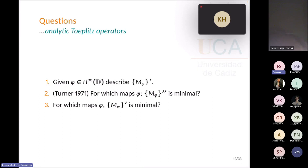The questions that people were interested in during the 1970s are: given a bounded analytic function, can we describe the commutant of the multiplication operator by phi? For which bounded analytic maps is the double commutant of the multiplication operator minimal — i.e., when does the multiplication operator have the double commutant property? And intimately related: for which maps is the commutant of the multiplication operator minimal?